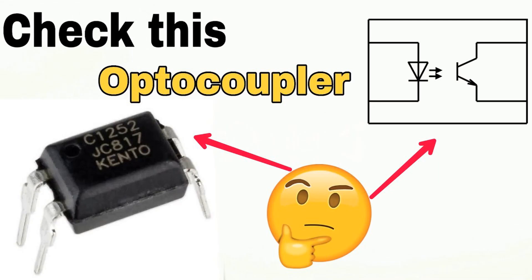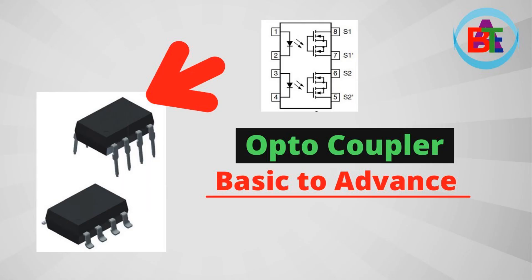The input section allows you to control the LED's emission of light by adjusting the current passing through it. By varying the input current, you can control the intensity of the light emitted by the LED, which in turn affects the operation of the optocoupler. In summary, the input section converts an electrical input signal into light, which is then transmitted across the internal barrier to the output section, where it is detected and used to generate an electrical output signal, achieving electrical isolation between the two sides.